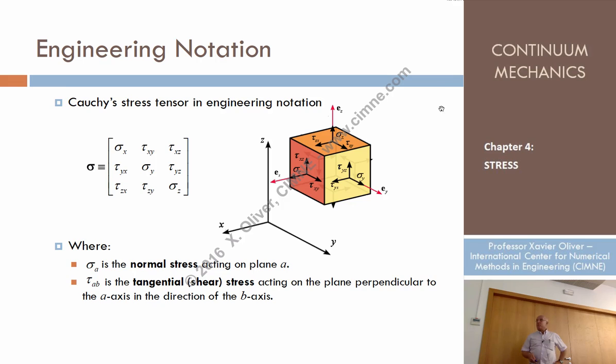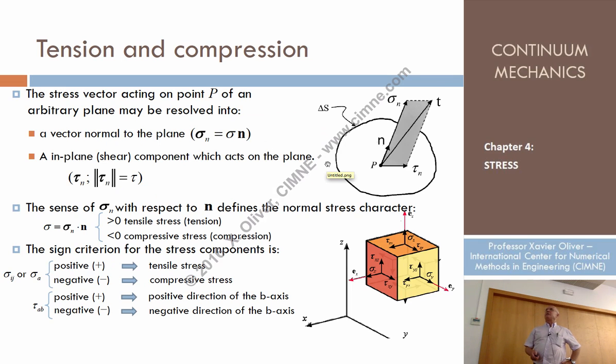So let's talk more about this. It's so important that we need to know the concept of tension and compression. Well, we have one plane, we have a traction in a plane, then we can always decompose this traction into two vectors, traction vector into two vectors. This, we call that this is the normal to the plane, one vector which is normal to the plane in the direction of n.